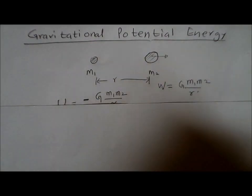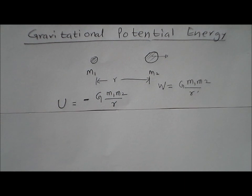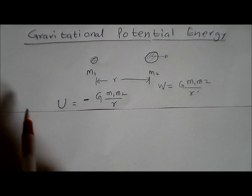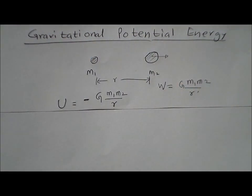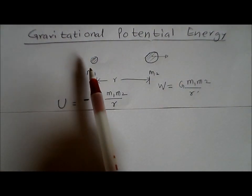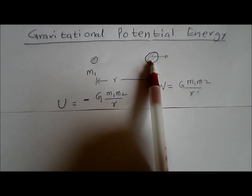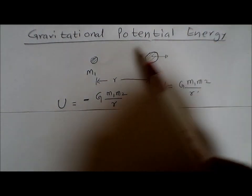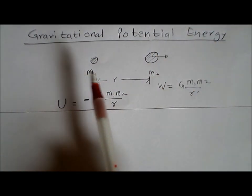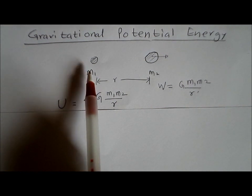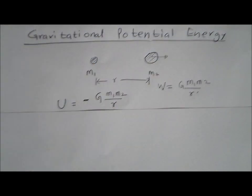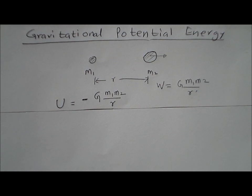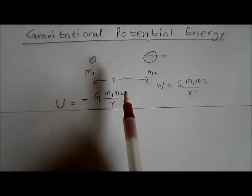In this lesson we will learn about how to derive the equation for gravitational potential energy. The gravitational potential energy is defined as the amount of work done in constituting this system. Let's say we have two masses — a small mass m1 and a mass m2 — and we ask: what is the amount of work that will be required to create this system?